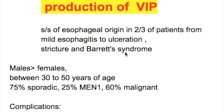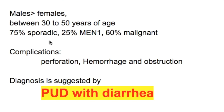Barrett's syndrome is a pre-malignant condition in which adenocarcinoma of the esophagus can develop; the condition is rapidly fatal. Zollinger-Ellison syndrome ulcers are more common in males, occurring between ages 30 to 50. Seventy-five percent are sporadic, 25% are associated with MEN type 1, and 60% are malignant. Complications include perforation, hemorrhage, and obstruction.